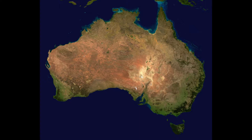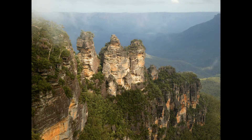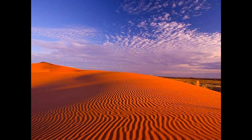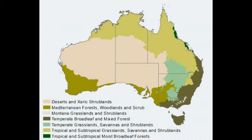Australia has two main geographic boundaries: the ocean and its mountain ranges. The mountain ranges are concentrated in the south-eastern region of the continent, and because of these mountains, a variety of biomes have formed. Another reason for the formation of Australia's biomes is its climate. Australia is the driest inhabited continent, with only temperate climates in their southern corners. These factors have caused the formation of Australia's four main biomes: the desert, tropical grasslands, temperate grasslands, and temperate forests.